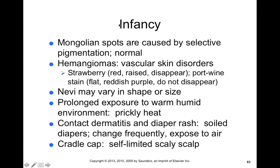In terms of infancy-related skin disorders: Mongolian spots are caused by selective pigmentation — this is normal, more like a birthmark. Hemangiomas can also occur developmentally — they're a vascular skin disorder with strawberry and port wine varieties. Strawberry hemangiomas are red and raised and typically disappear within several years after birth. Port wine stained hemangiomas are flat, reddish-purple, and typically don't disappear. You can also be born with nevi. Prolonged exposure to warm humid environment can cause prickly heat in infants. Contact dermatitis or diaper rash occurs where soiled diapers lead to rashes from the chemicals found in feces or urine — changing frequently and exposing wet skin to air can help prevent this.